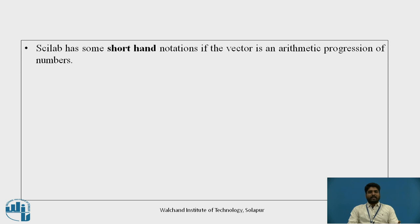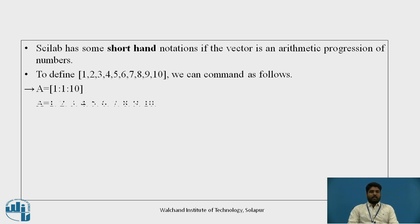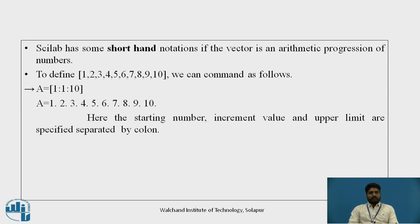Scilab has some shorthand notations if the vector is an arithmetic progression of numbers. To define 1 to 10, the command is: a = 1:1:10, where 1 is the starting number, 1 is the increment value in the middle, and 10 is the upper limit. You get the output from 1 to 10.